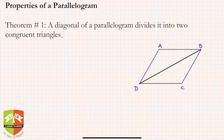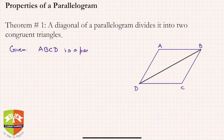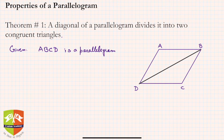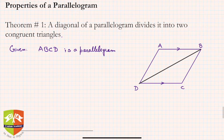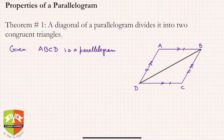You can see clearly that BD is a diagonal. ABCD is a parallelogram, so let's start our proof. Since ABCD is a parallelogram, that means AB is equal to DC as well as parallel to DC. Similarly, AD is parallel to BC and AD is equal to BC.